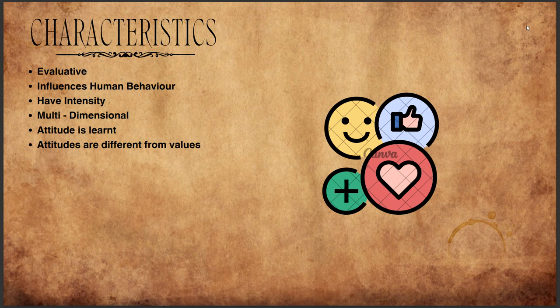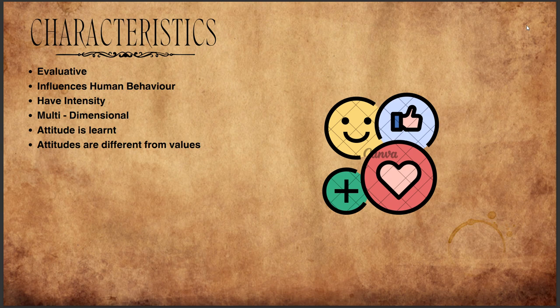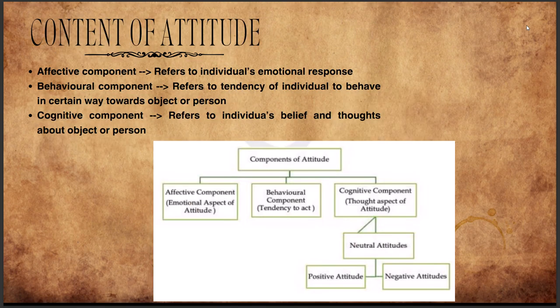Next is 'multi-dimensional' — attitude is composed of different components: cognitive, behavioral, and affective, which we'll be dealing with in the upcoming slides. Attitude is also learned — it is not inborn but is learned through social interaction, experiences, and personal experiences. Attitudes are also different from values: values are ideals, but attitudes are narrower — they are our feelings. For example, honesty is a value, but the attitude is our willingness to follow it.